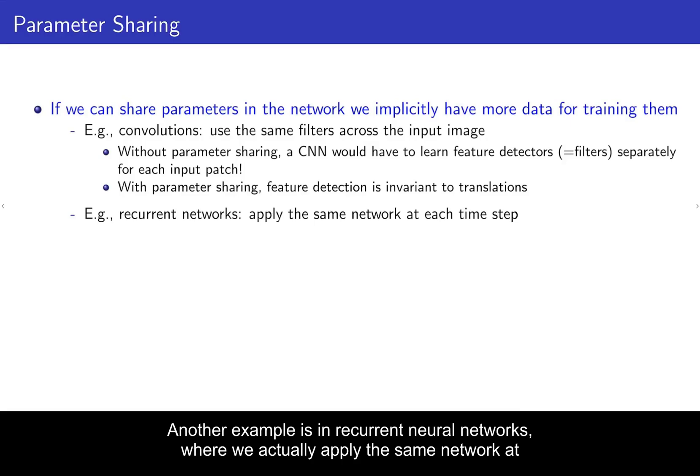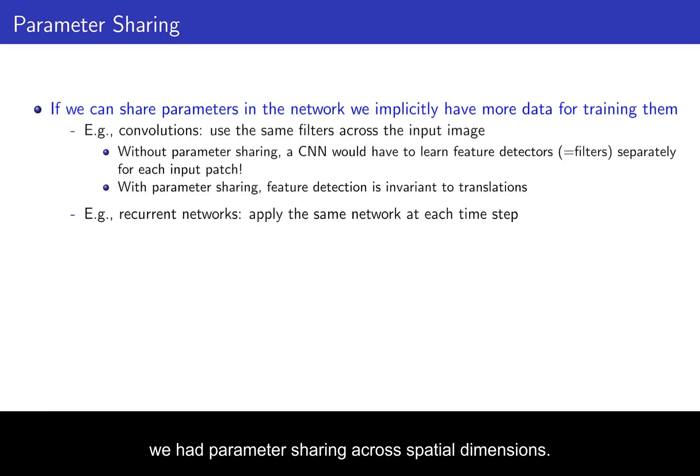Another example is in recurrent neural networks, where we actually apply the same network at each time step. So there, we have parameter sharing across time, whereas for convolutional neural networks, we had parameter sharing across spatial dimensions.